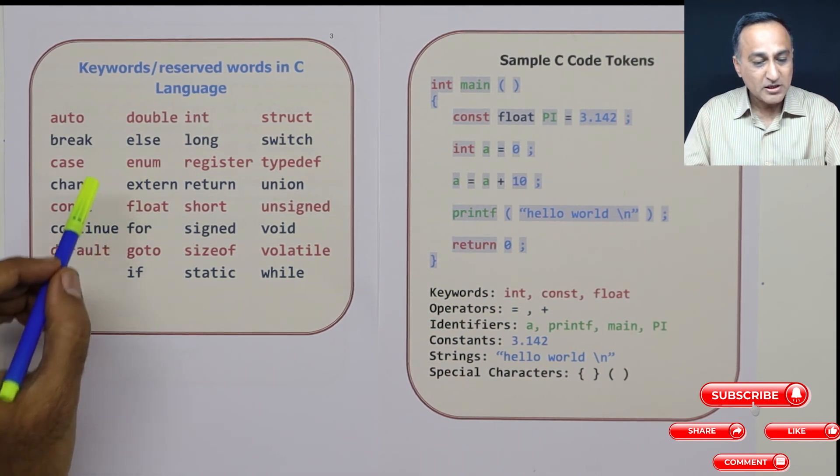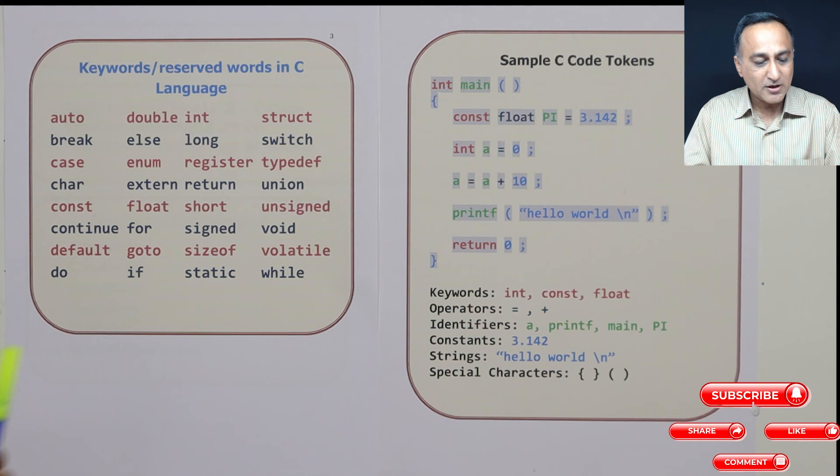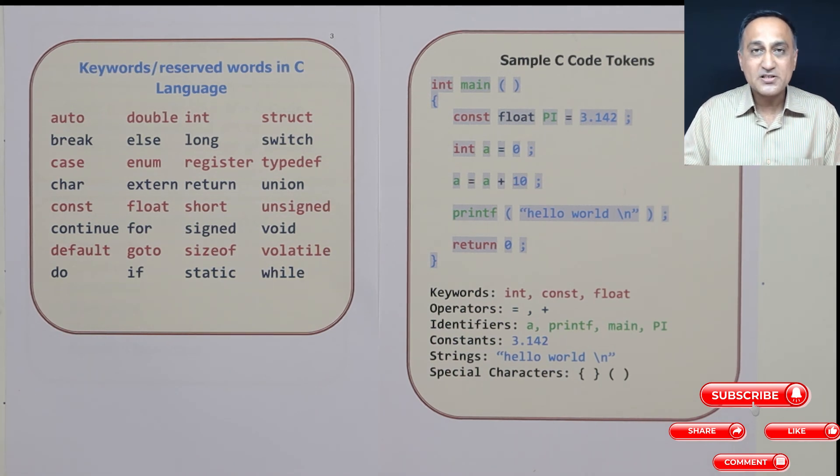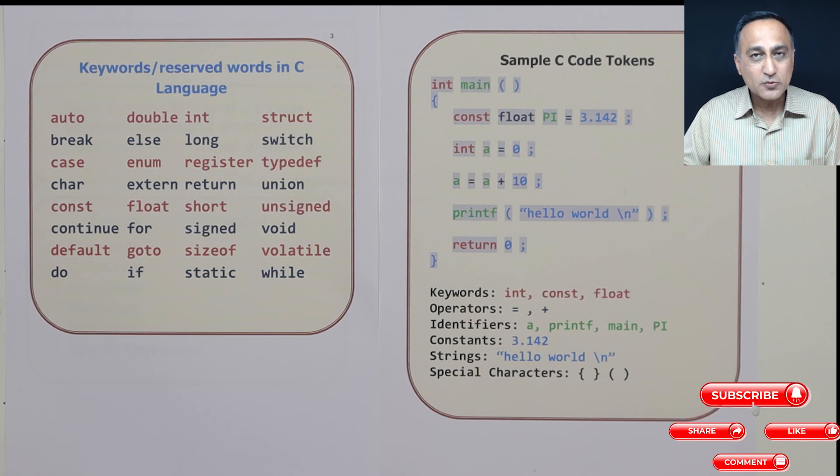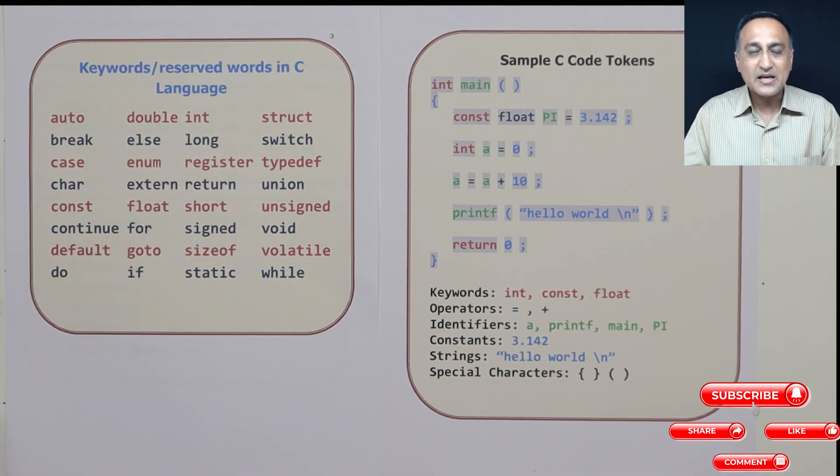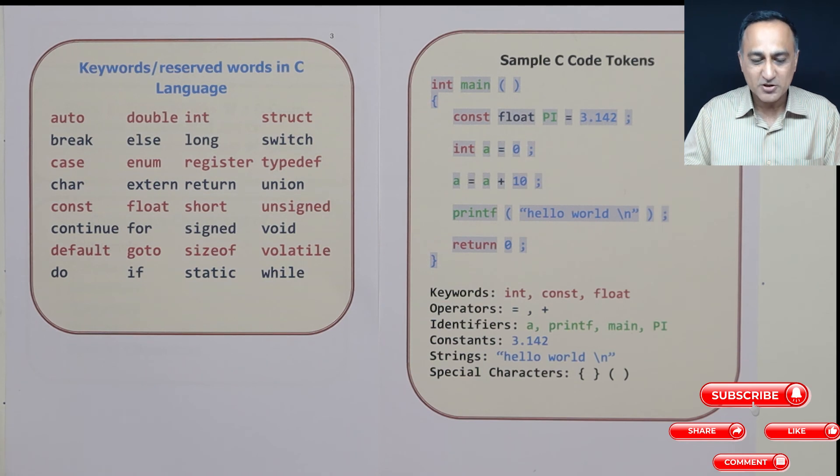We have used a number of them. For example, I've shown you enum, else, if - these are all examples of keywords. You cannot declare a variable called int or if, because int is a reserved word, which is fine, but if is also a word which has special meaning to a compiler. When you give if, it gets confused with the if statement. So please do not use any of these as names of variables or names of functions.